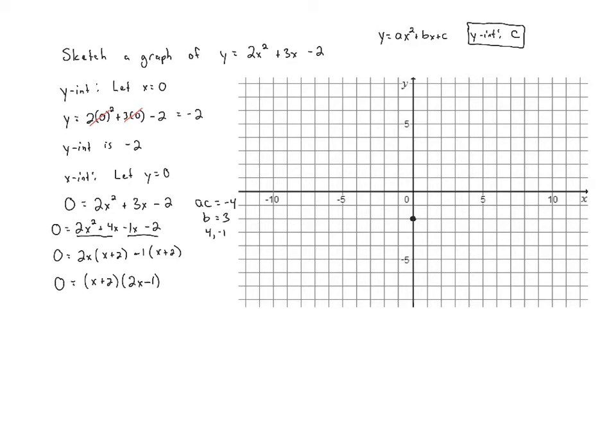So we have 0 equals x plus 2 times 2x minus 1. Once we've factored this we can set each factor equal to 0 and solve. x plus 2 equals 0 or 2x minus 1 equals 0. When we solve the first one we end up with x equals negative 2. The second one takes two steps. After we add 1 we get 2x equals 1, and when we divide by 2 we get x equals 1 half. So the x-intercepts are going to be negative 2 and 1 half.